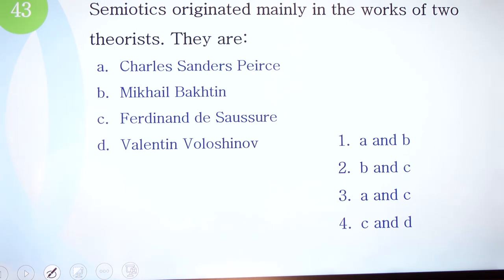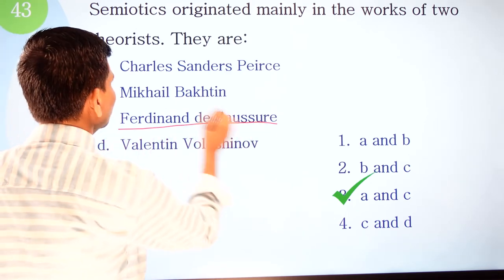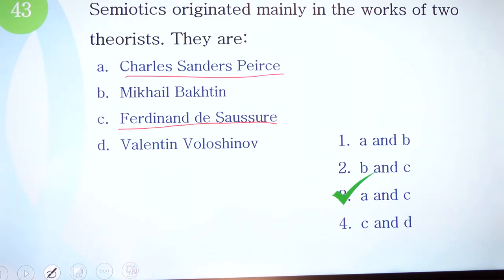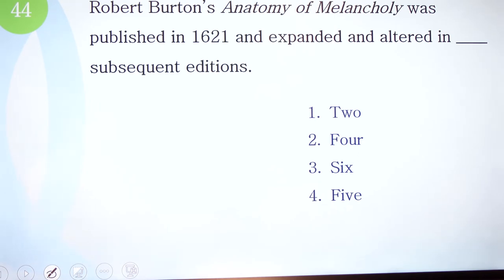Question 43: semiotics originated mainly in the works of two theorists. Options: A) Charles Sanders Peirce, B) Mikhail Bakhtin, C) Ferdinand de Saussure, D) Valentin Voloshinov. This is a straightforward question — the correct option is A and C — Charles Sanders Peirce and Ferdinand de Saussure are the two most influential figures in the origin of semiotics.